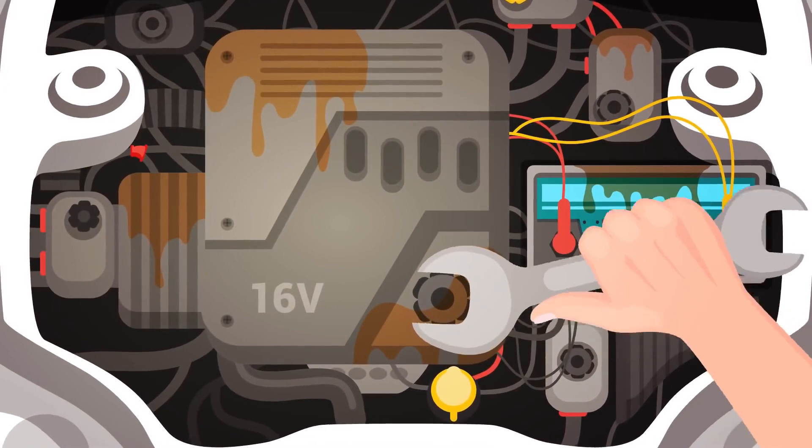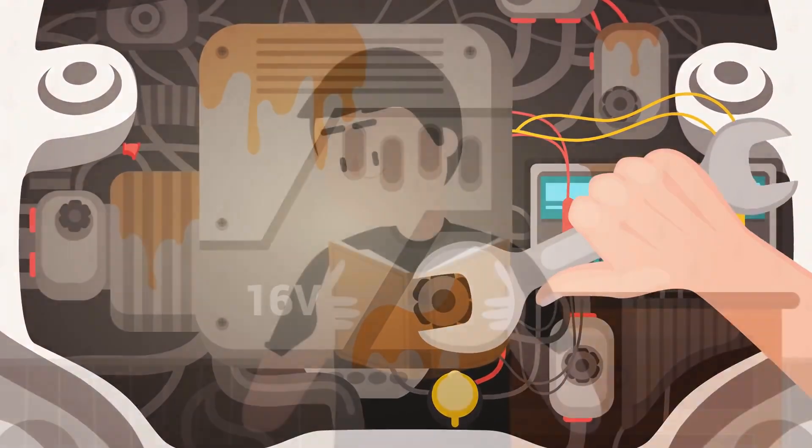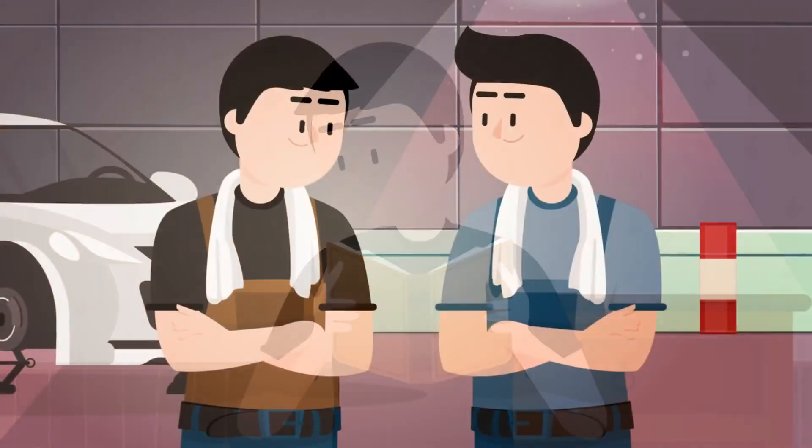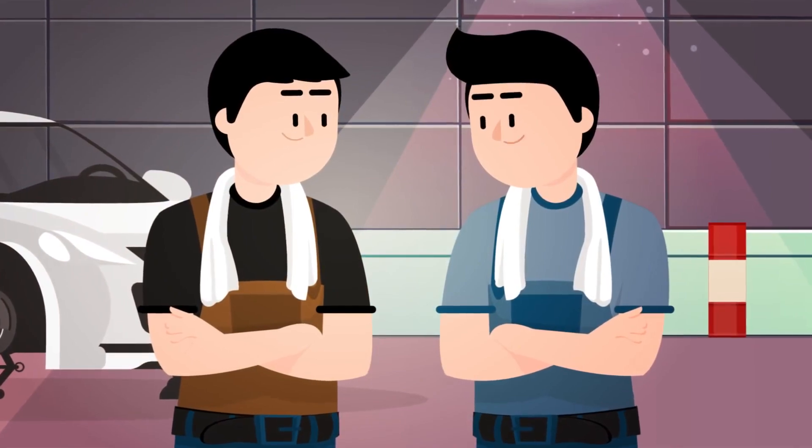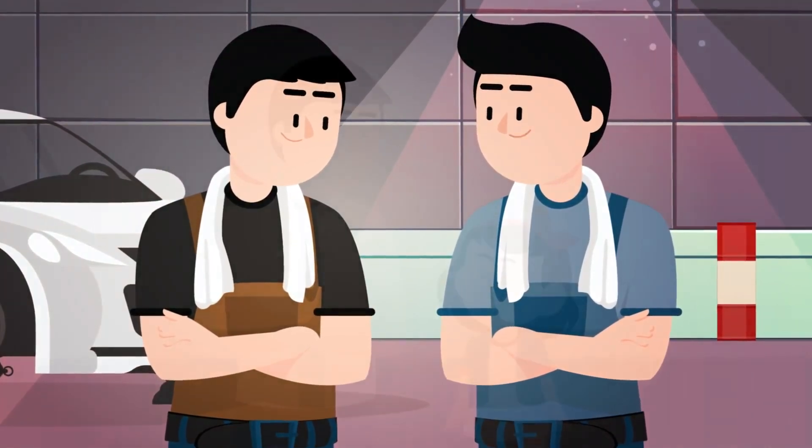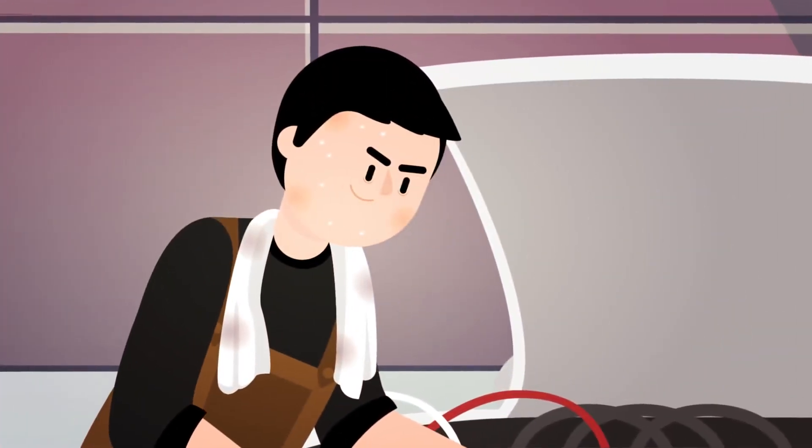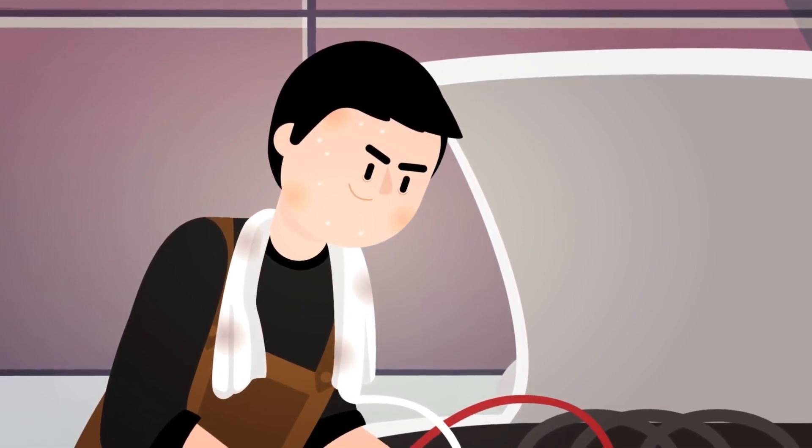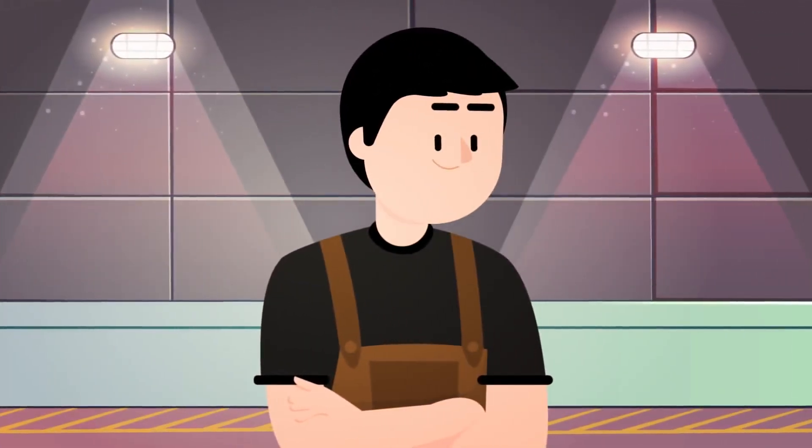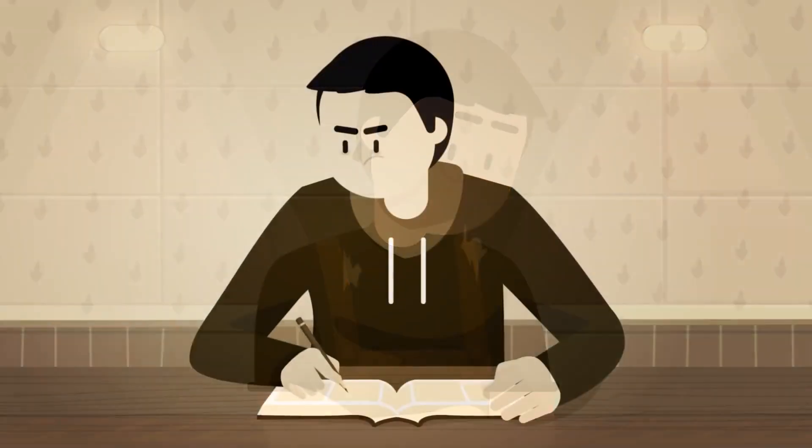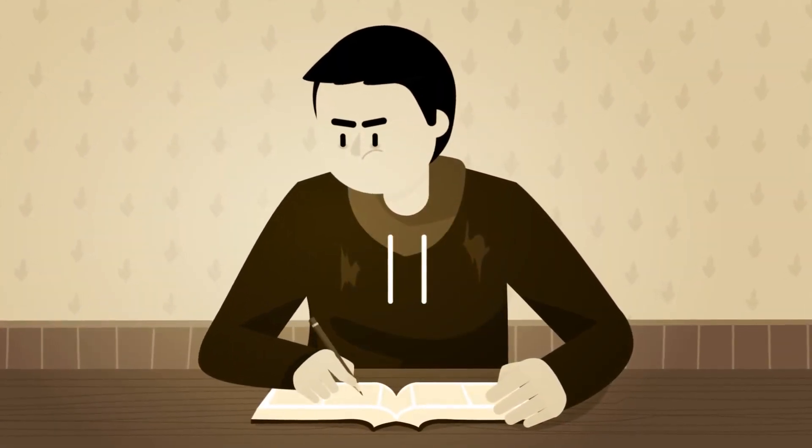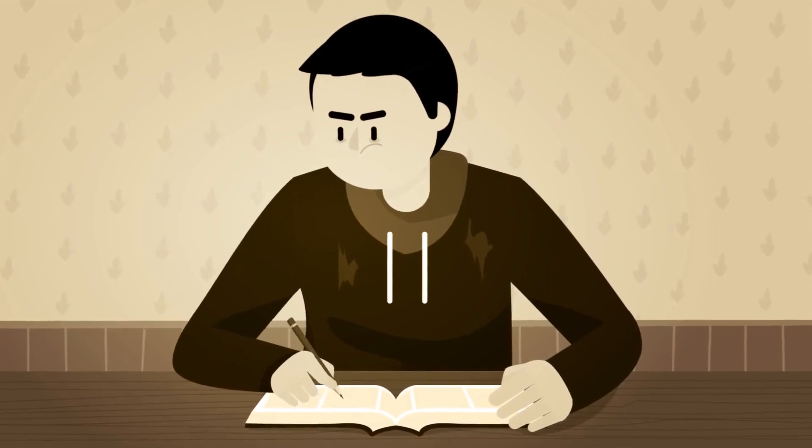And from that point on, David became obsessed with cars. Whenever he was not taking care of his sister, he would be reading books about cars. He would talk to other mechanics, go to car conventions. This was the thing that gave him and his little sister a real shot at life. After six months, David had become one of the head mechanics at the shop, outperforming all the senior mechanics. Then fast forward another six months and he had become one of the most skilled mechanics in the city because he was so desperate and eager to learn more and more that nobody could keep up with him.